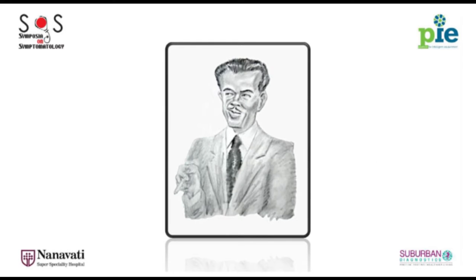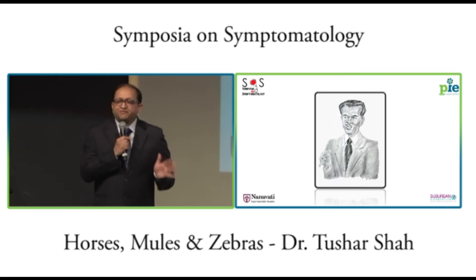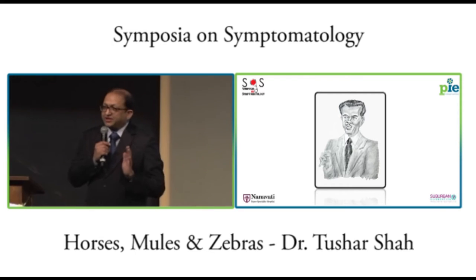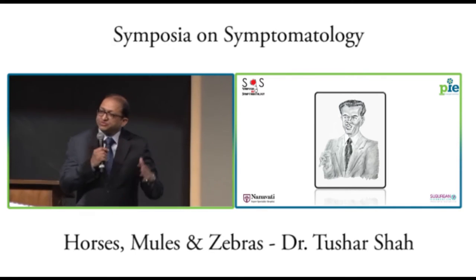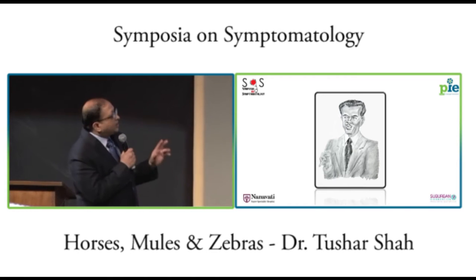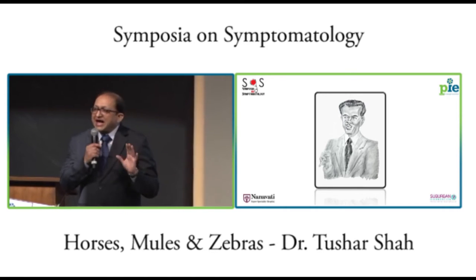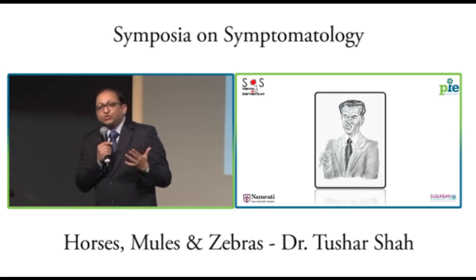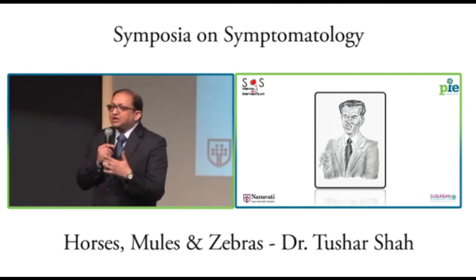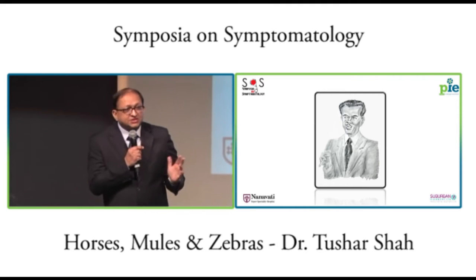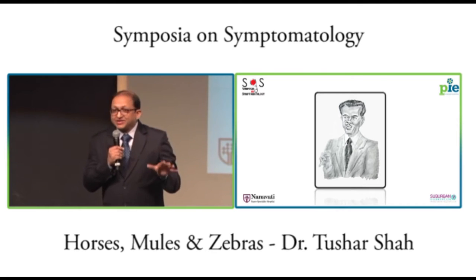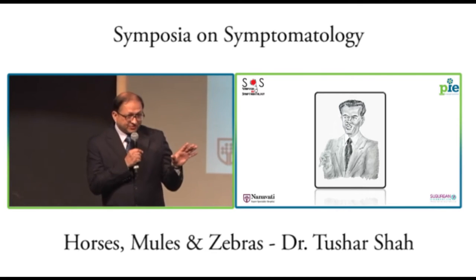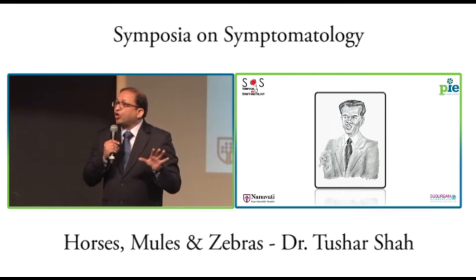Mr. Willie Sutton, in the early part of the 20th century, was the most prolific bank robber in the US. He used to rob banks, go to jail, escape from jail, rob banks, go to jail. When a reporter asked him why he robbed banks and not stores or other places, he said, 'Because that is where the most money is.' He did the obvious thing.